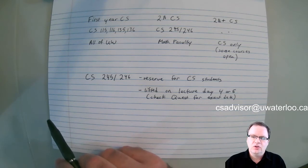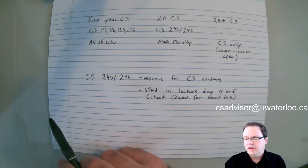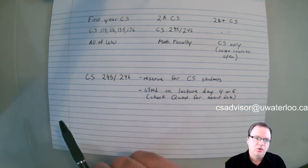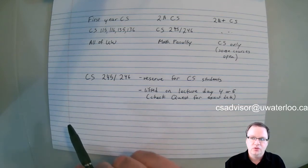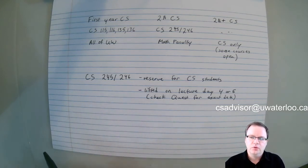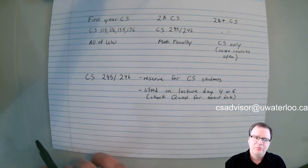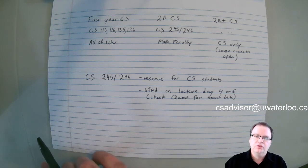Namely, the course was so popular among senior math students, and the way Quest works is Quest gives priority to you the more senior you are. We had a problem with so many senior math students wanting to take these courses that we couldn't fit in our own students. So what we had to do was put a reserve on CS245 and 246, which basically says—and this number varies a little bit from term to term—but usually something in the neighborhood of 85% of the seats are reserved for computer science students.